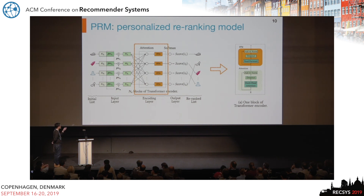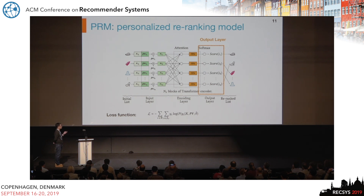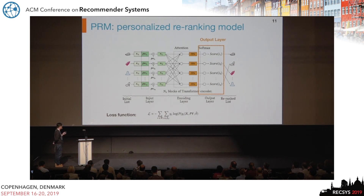This is the encoding part. For the output layer, it takes the hidden vector as input, followed by a fully connected neural network layer and a softmax layer, to generate the conditional click probability score. According to this score, we produce a re-ordered list.